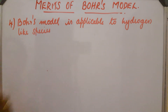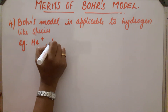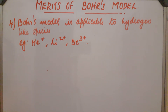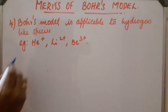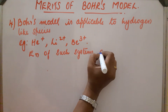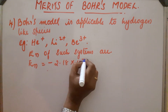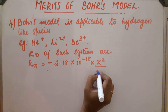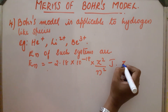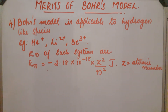Fourth point: Bohr's model is applicable to hydrogen-like species. Examples: helium plus, lithium 2-plus, beryllium 3-plus — all these contain one electron. So this model is applicable to all these species, and En of such systems can be calculated. That is, En equals minus 2.18 × 10⁻¹⁸ × Z² / N² joules, where Z is the atomic number of the particular species.